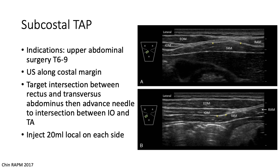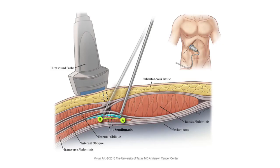If the needle is in the correct plane, the fluid will travel into the transversus abdominis plane between the internal oblique — similar to the lateral TAP block. You can use a total of 20 mils of local anesthetic. The probe is placed obliquely along the costal margin; starting medial toward the midline, scan lateral until you see the transversus abdominis plane come into view below the rectus. The bottom image shows the needle injecting local into the correct plane.